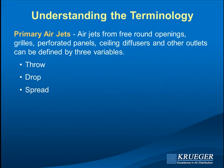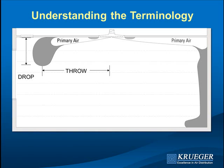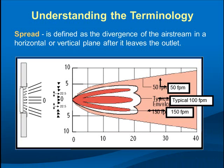Some of these terms appear in catalogs and some don't — I'll explain why. Throw is the distance from the center of the diffuser to a point where the velocity has slowed to a specified terminal velocity. Throw is meaningless unless you specify the velocity to which the jet has slowed. The jet slows because it induces room air; as the mass increases, the energy dissipates. We typically report throw at three velocities.